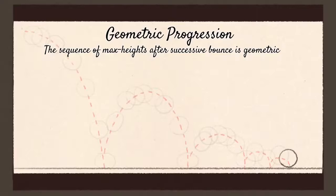A bouncing ball loses an approximately constant fraction of its remaining energy with each bounce. And in turn, the sequence of maximum heights is approximately geometric.